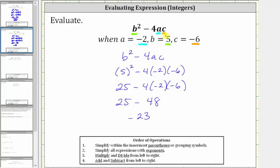The expression b squared minus 4ac is equal to negative 23 when a equals negative two, b equals five, and c equals negative six. I hope you found this helpful.